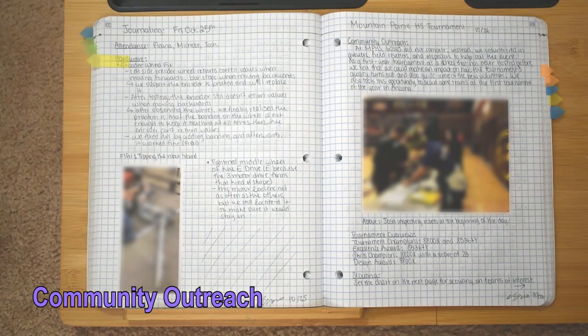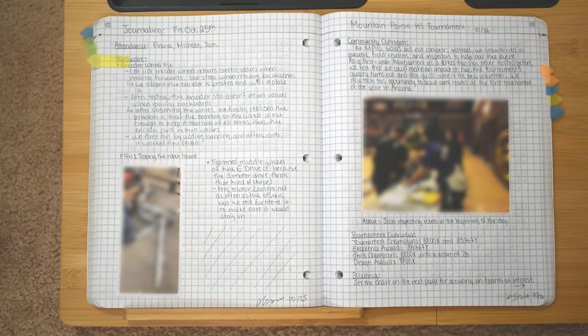Over the course of the year, we found ways to help out our local community through volunteering at tournaments and mentoring younger teams. This year, our team volunteered at six or so events as Cures, Field Resetters, and Referees. We make sure to document this service work, as well as any additional scouting in our community outreach entries, which are located throughout the journal.